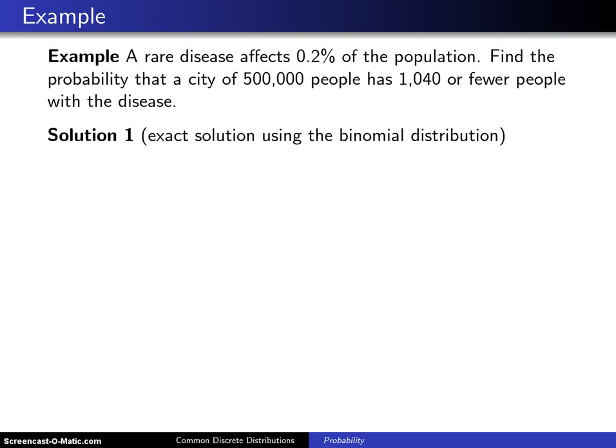So far, the Poisson distribution has been introduced as a distribution which approximates the binomial distribution when n is large. Here's an example that illustrates that approximation.